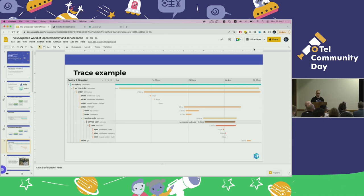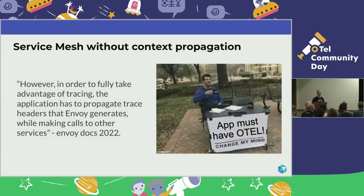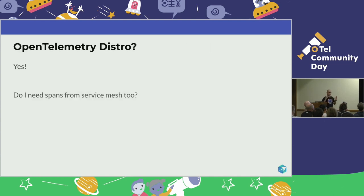Some people think you can get tracing from a service mesh, but that's not actually the case — you really need to implement OpenTelemetry. This is also stated in the Envoy docs: yes, they have tracing, but you still have a way to go. So when using service mesh, you're going to implement OpenTelemetry anyway. The question I want to ask is: if I've already implemented OpenTelemetry, is it also beneficial to get spans from the service mesh?